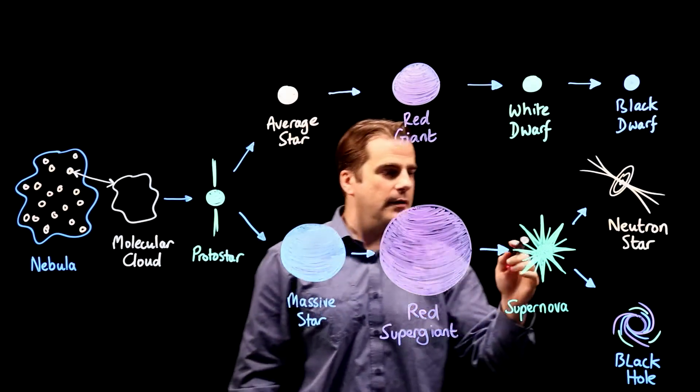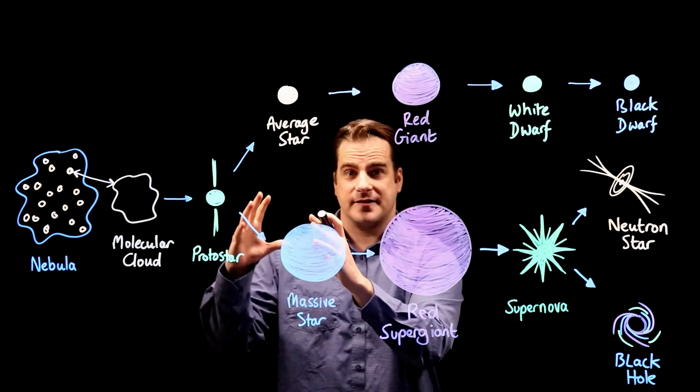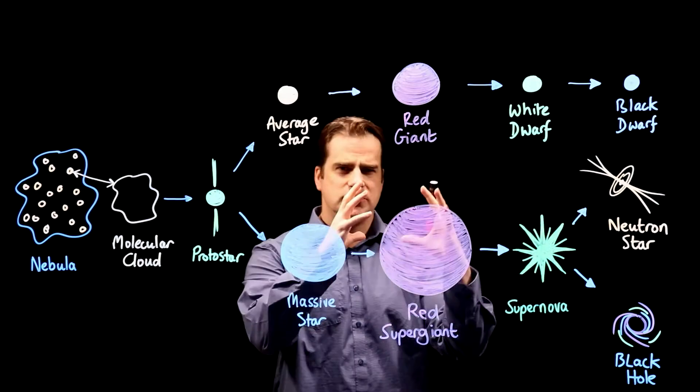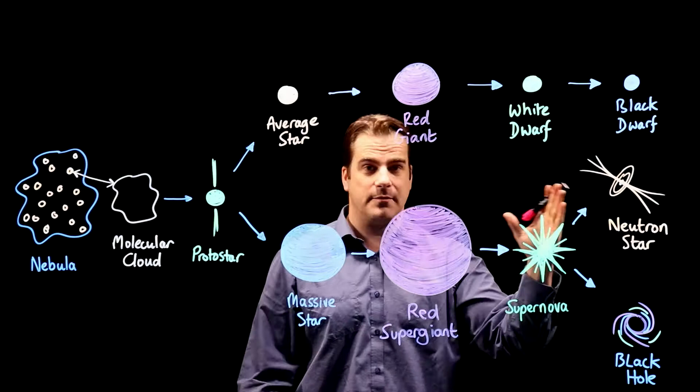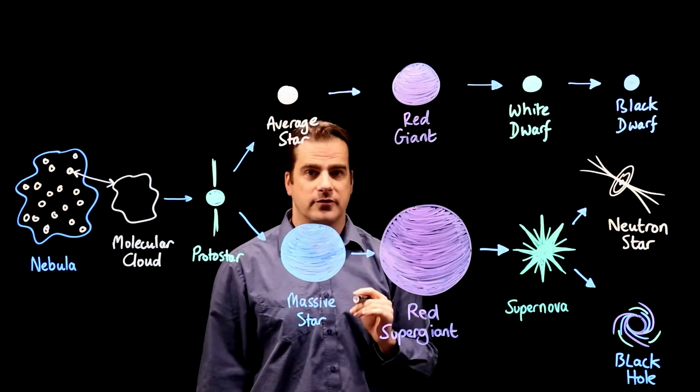But it started off with mass at least eight times that of our sun. So there's a huge amount of matter in something only 20 kilometers across. It's incredibly dense and made mostly of neutrons.